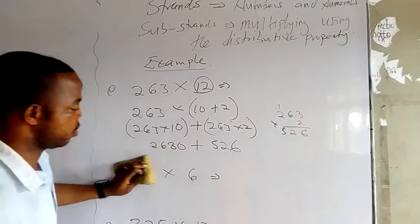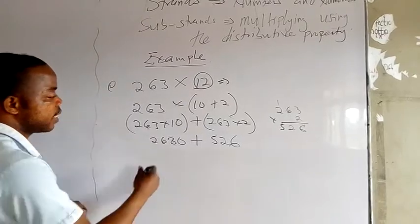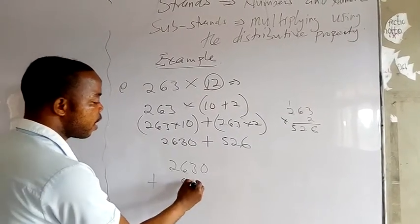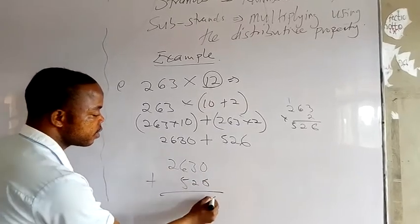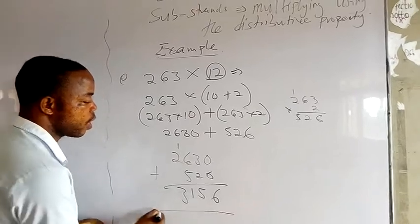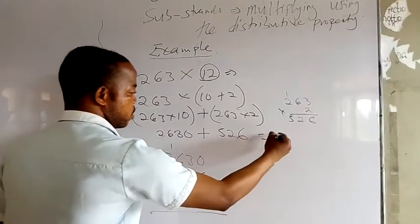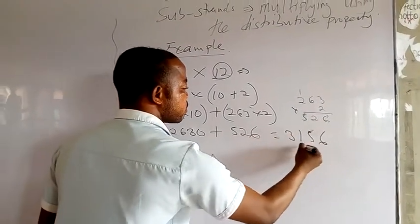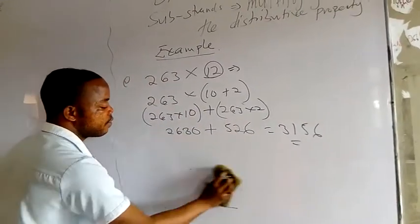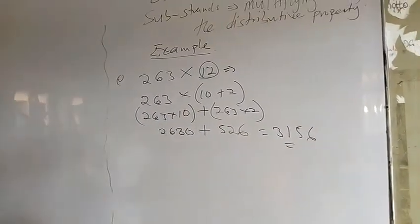When you are done, we just add them. So you have 2630, 0 plus 6 is 6, 3 plus 2 is 5, 6 plus 5 is 11, remember 1, you have 3, 1. So answer becomes 3156 and you get your final answer. As you can see there, it's very simple. I hope it is clear.